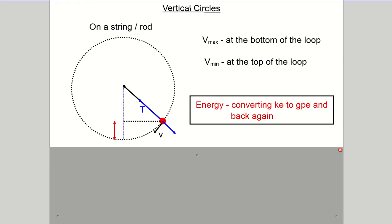It depends how much energy you've got initially, but remember the total energy of the system doesn't change. The energy type can change but you're just transferring the same number of joules between kinetic and GPE. In the diagram, if this is a string or a metal rod or plastic rod, there is tension pulling the particle towards the center of the circle which gives us our acceleration and our circular path.